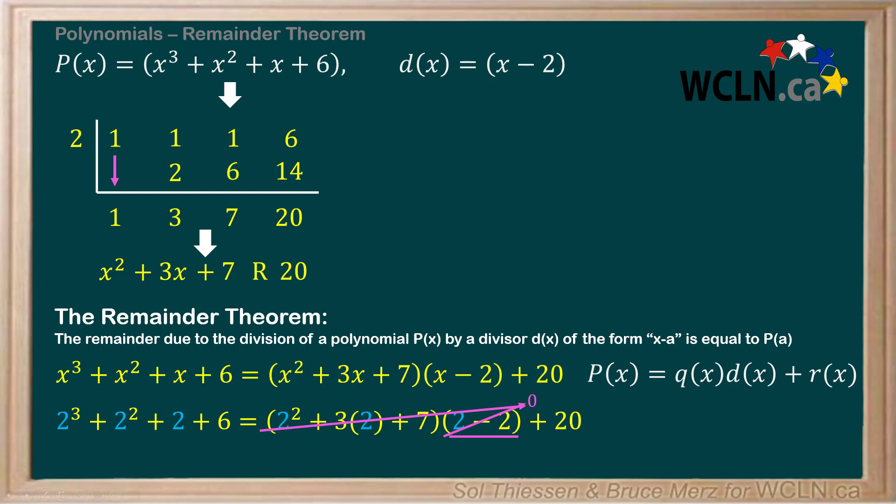Now evaluating the left-hand side, which is P(2), or the dividend polynomial evaluated at x equals 2, we have 2³, which is 8, plus 2², which is 4, plus 2, plus 6. The sum is 20.